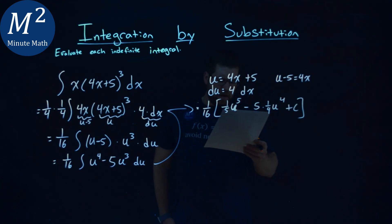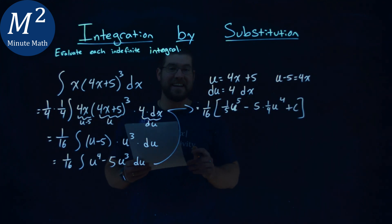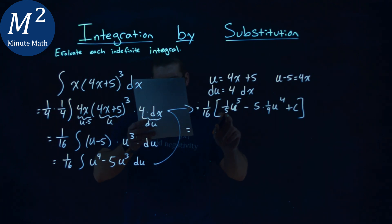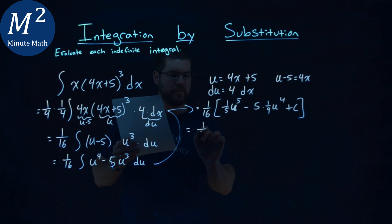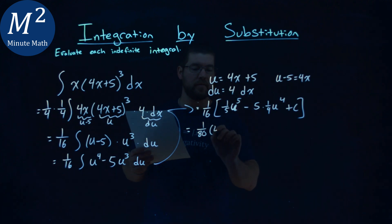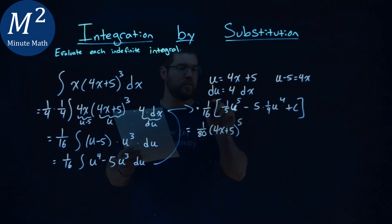So let's go multiply this out now. 1 16th goes across the board here. 1 16th times 1 fifth, and that's a 1 over 80. And then, instead of a u, I'm going to substitute that in. So u is a 4x plus 5. We raise that to the fifth power. So just multiplying that out. Don't forget to do the second part.